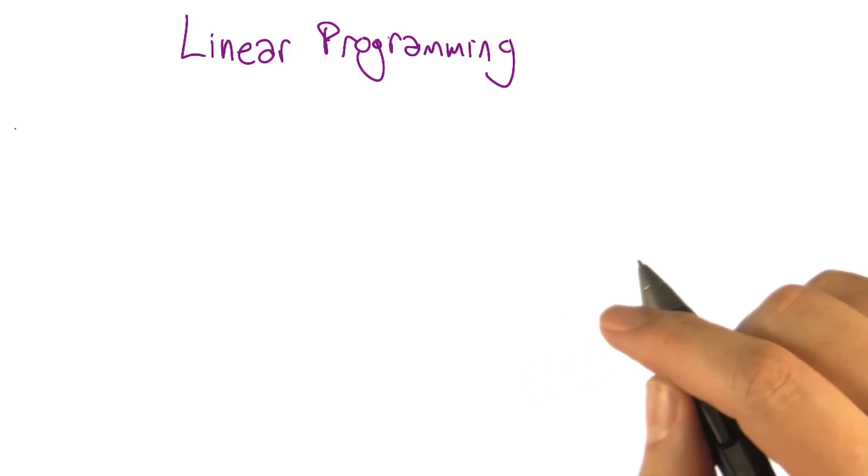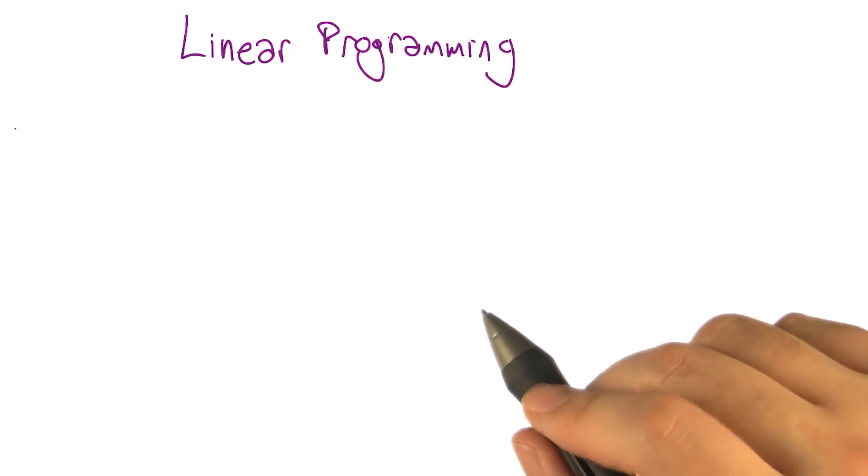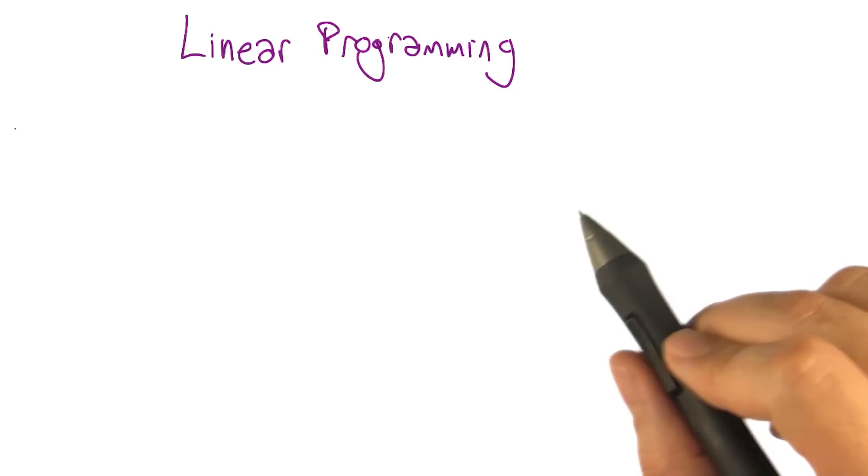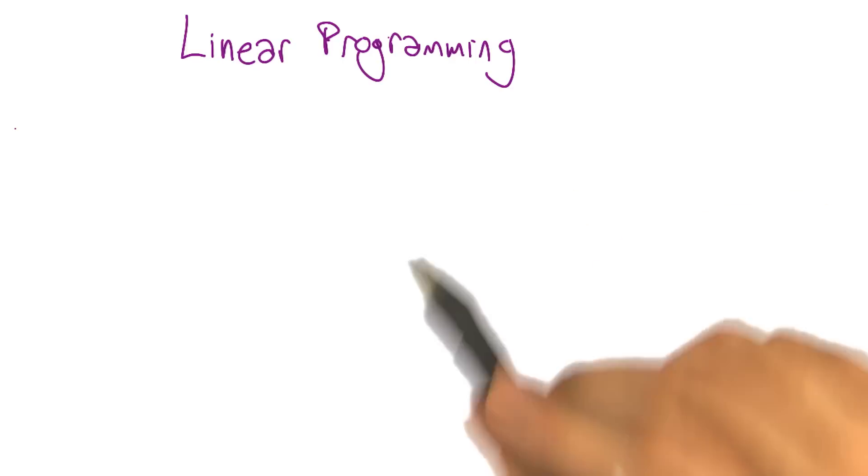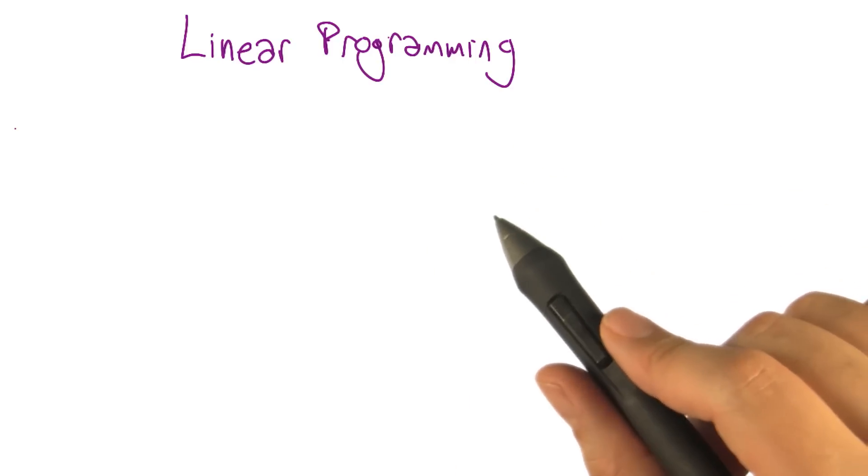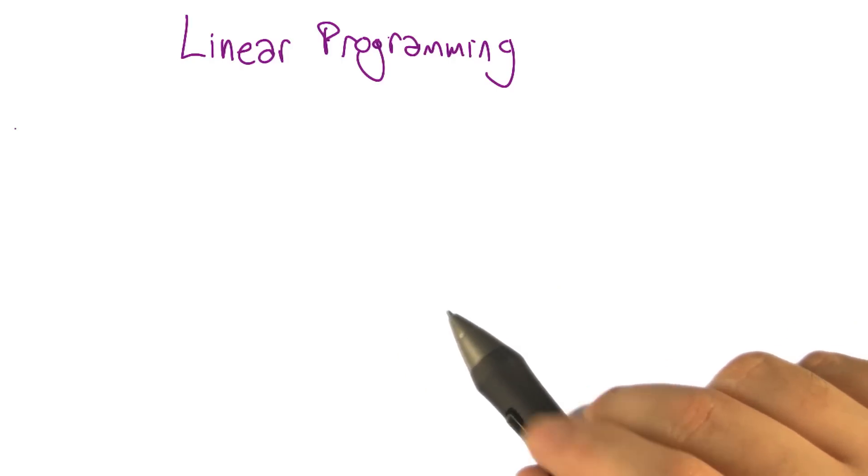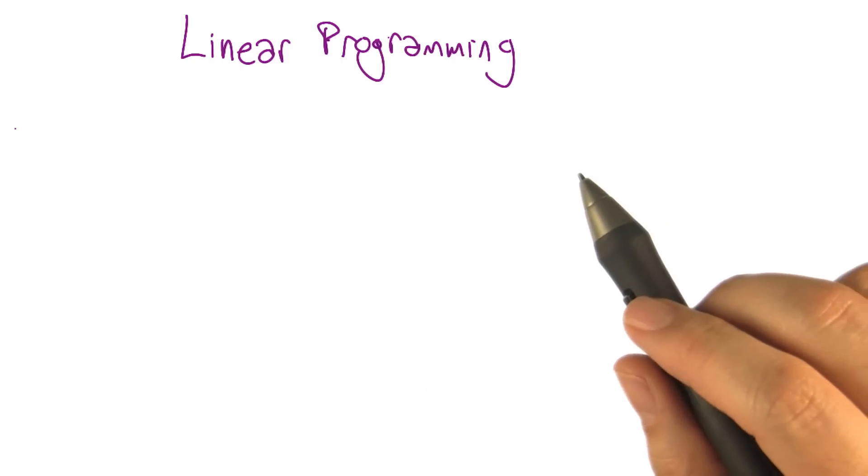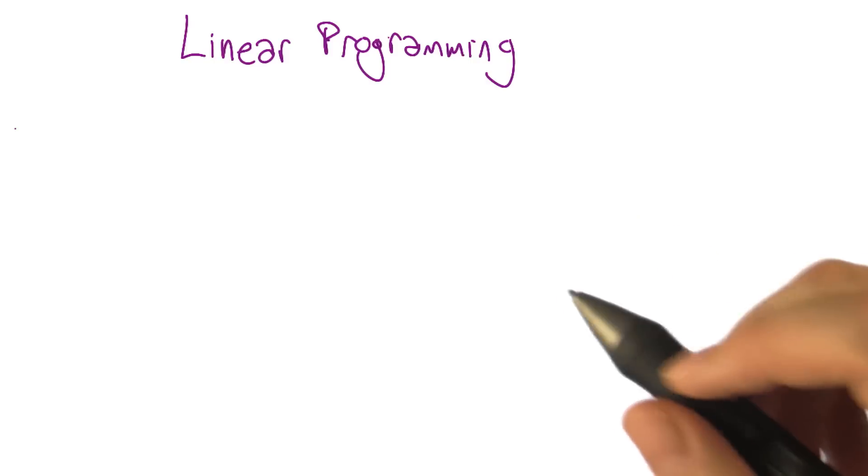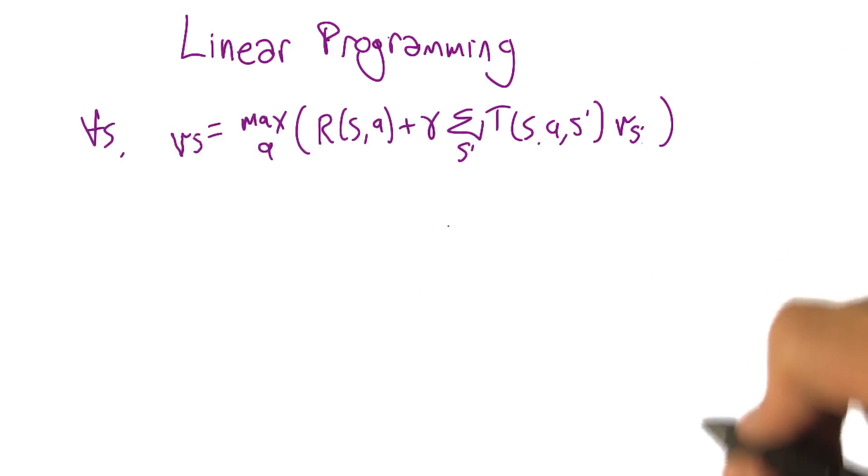So if we're going to use this idea to solve Markov decision processes, we need a way of encoding a Markov decision process solution as a linear program. So we need to encode our MDP as a linear program with linear constraints and a linear objective function. So how do we know how to solve an MDP? We just have to solve the Bellman equations.